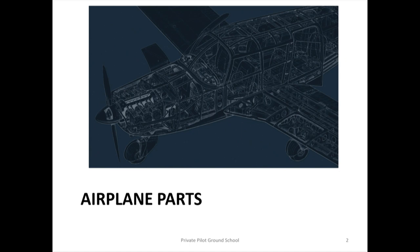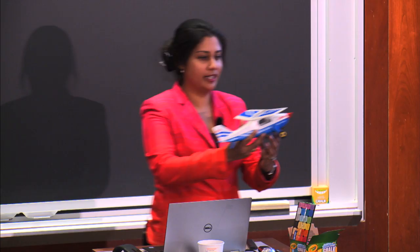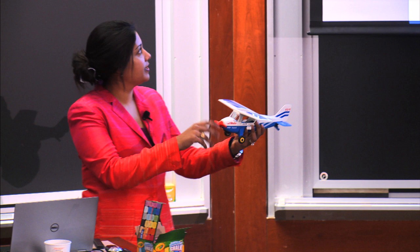Just so that we have a common vocabulary, we're going to talk a little bit about airplane parts. Here in my little airplane model, you can see that at the front you have your propeller. The engine and the propeller in this little plane is up here at the front.